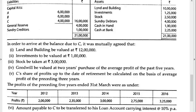The profits of the preceding 5 years are given. Also, the amount payable to C is to be transferred to his loan account carrying interest at 10% per annum. The first step is to prepare the revaluation account. Always check these three things first: revaluation, reserves in the balance sheet, and goodwill - then treat accordingly.